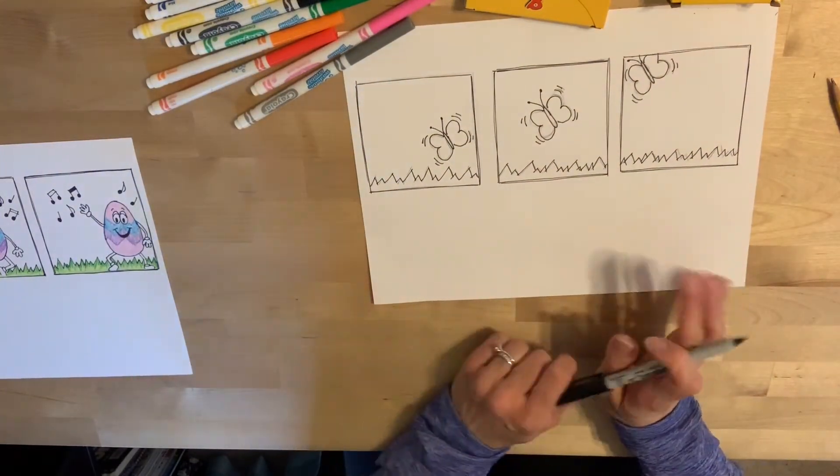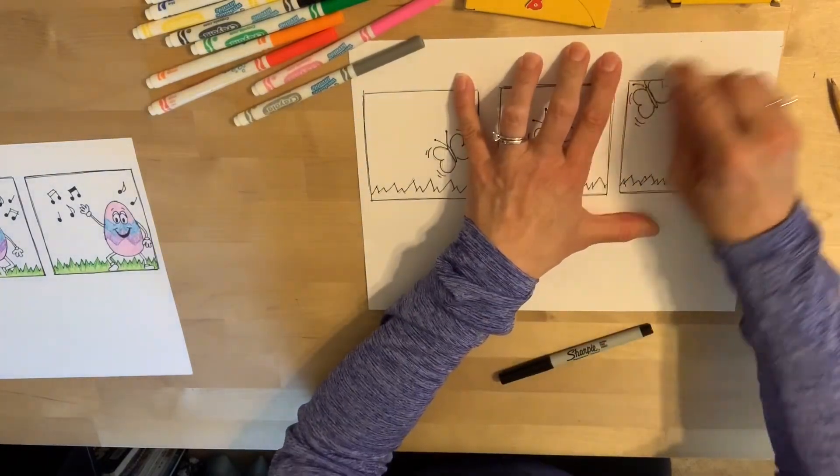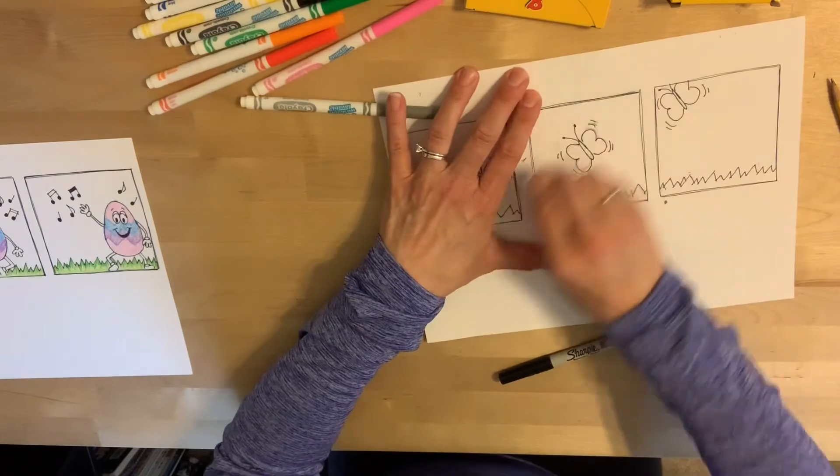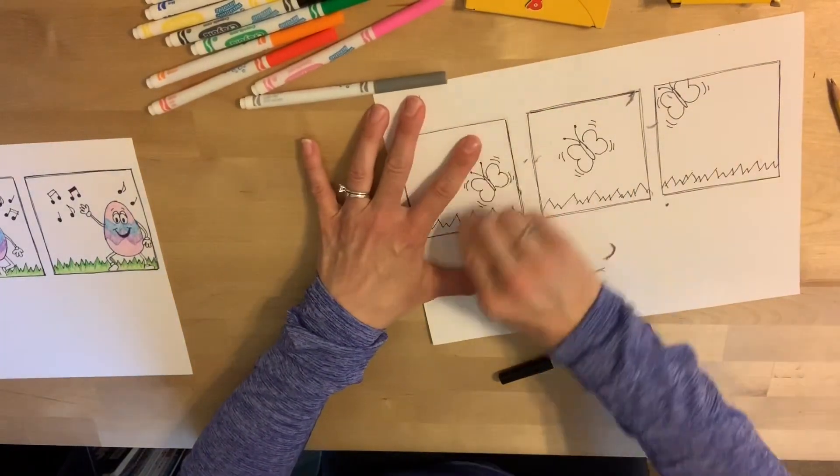Once you have everything outlined in Sharpie or pen, colored pencil, if you want to erase any pencil lines, you can. But then, it's time to color. To add a bunch of color to each frame.